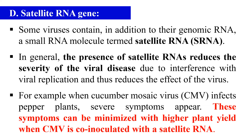We can transfer the genes of the satellite RNA, which will ultimately reduce virus replication. For example, when CMV (cucumber mosaic virus) infects the pepper plant, the symptoms were minimized with higher plant yield when the CMV was co-inoculated with the satellite RNA. This indicates that satellite RNA provides protection against the virus by interfering with viral replication.